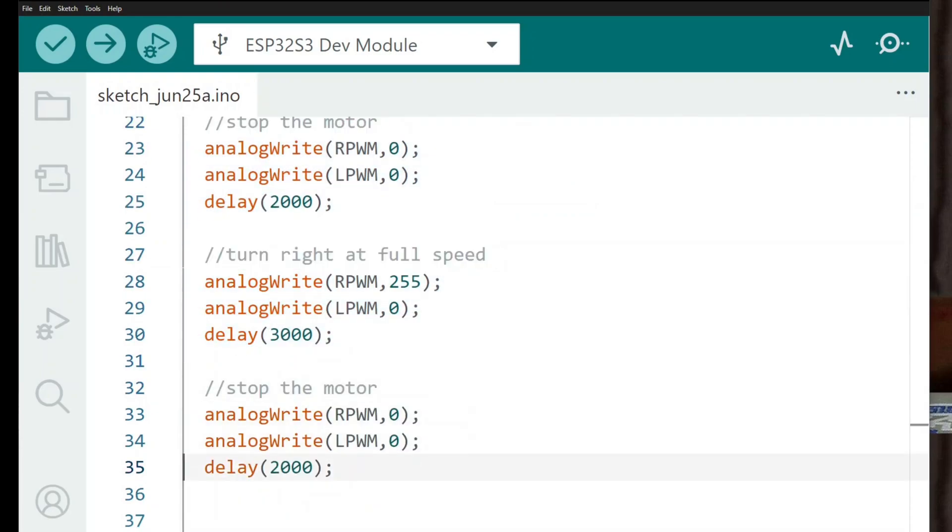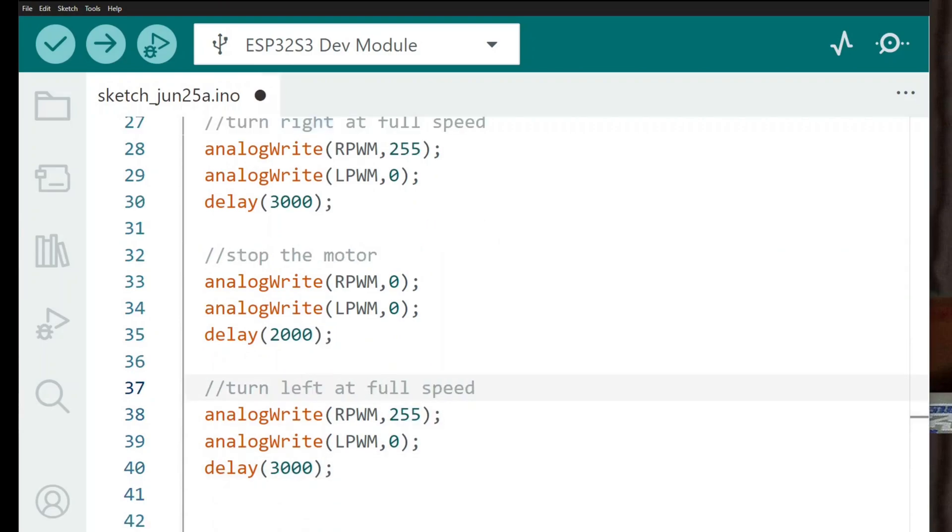After that, we repeat the same steps again, but this time using a lower speed so you can see how it behaves running slowly in both directions.